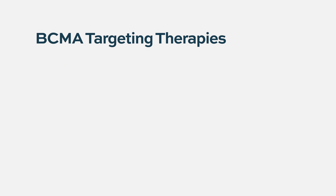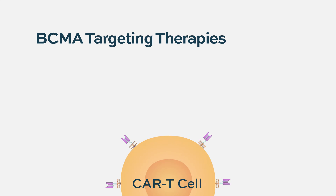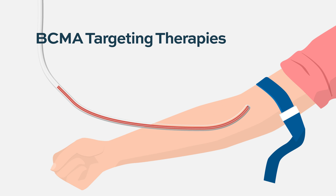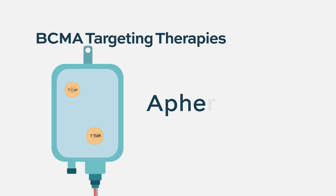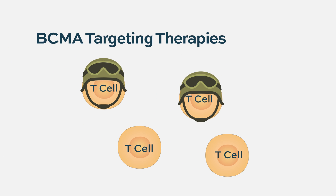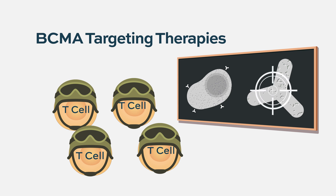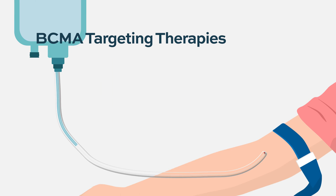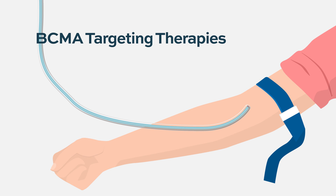The third family that can target BCMA is the CAR T-cells. This is true cellular therapy. You take out of the blood of the patient some T-cells through a process called apheresis. It's not dangerous — it's a relatively comfortable process. You collect these lymphocytes, the soldiers that we would like to educate and engineer. They are outside the body and engineered to target BCMA. Once they are ready, they are in a bag and infused into the body of the patient after certain preparation.